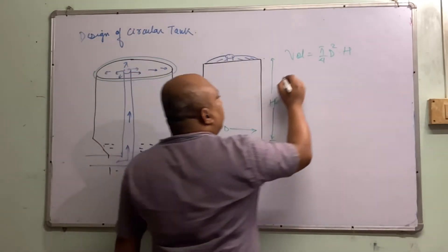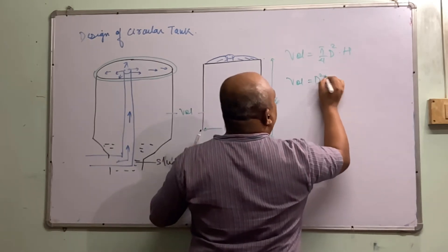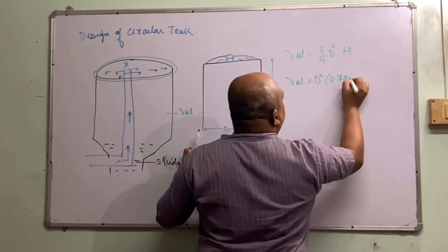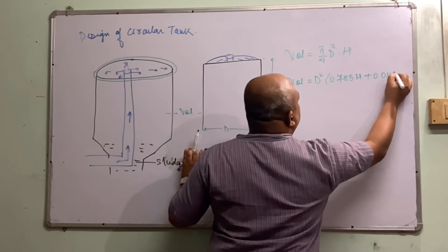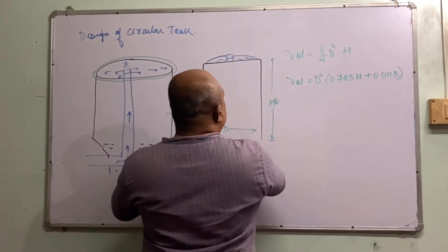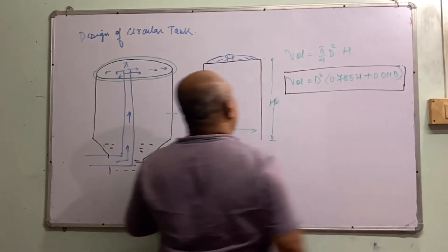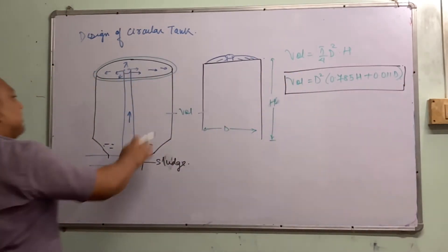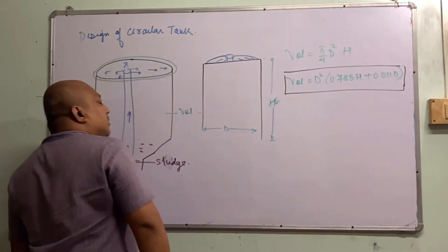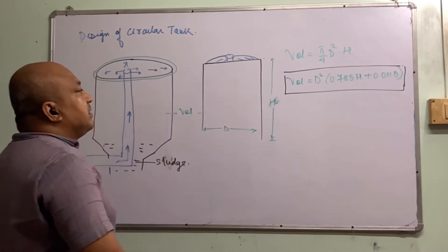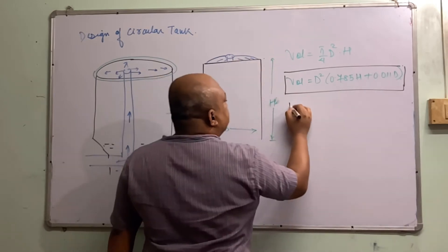So we use an empirical formula: Volume = D² × (0.785H + 0.011D). This equation is very important and you have to remember it. The volume of water in a circular sedimentation tank is not simply pi/4 × D² × H, but rather this adjusted empirical formula.